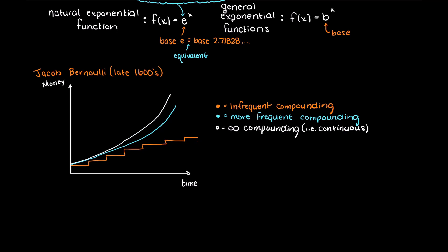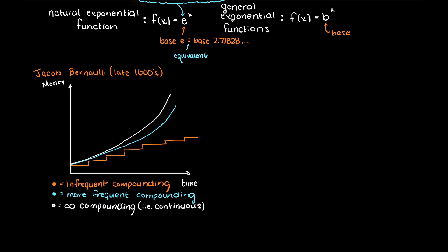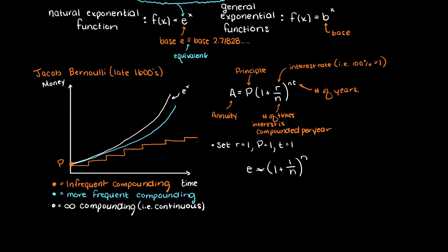Well, what Bernoulli found was that the following equation can be used to determine the value of money in a year, where r is the interest rate and n is the compounding periods in the year, and t is the number of years. While this looks really familiar doesn't it, by setting our interest rate to 100% and our period one year, we get our natural exponential function.